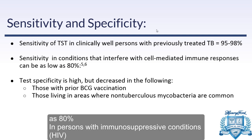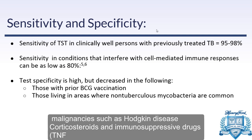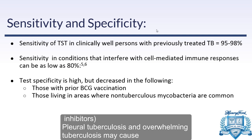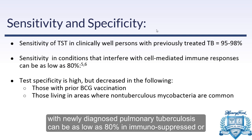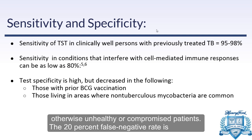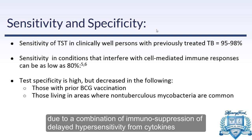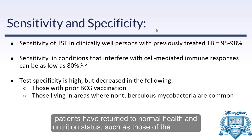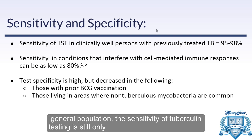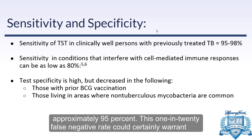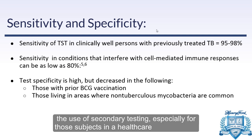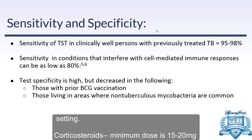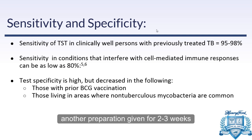Sensitivity and specificity of the TST: in patients previously treated for TB, sensitivity is very high at 95-98%, as expected. In patients with processes interfering with cell-mediated immunity — HIV, Hodgkin's lymphoma, corticosteroids, immunosuppressive therapy — sensitivity drops significantly to about 80%. Specificity is high, but because of the protein used and cross-reactivity, those with prior BCG vaccination or those in areas with high prevalence of non-tuberculous mycobacteria have significantly decreased specificity and many more false positives.